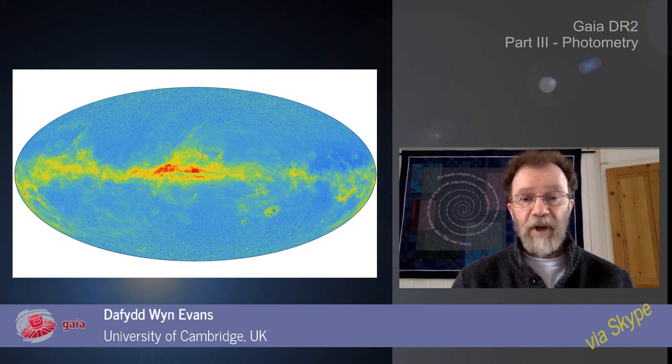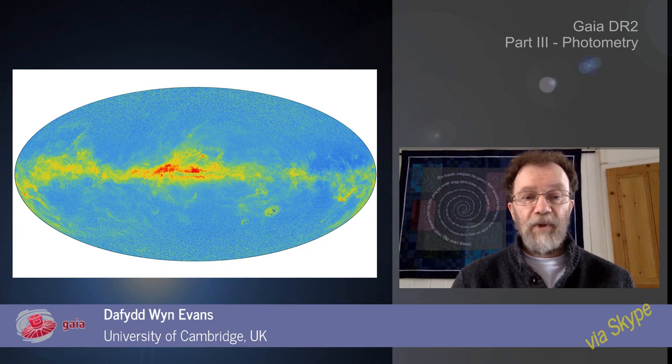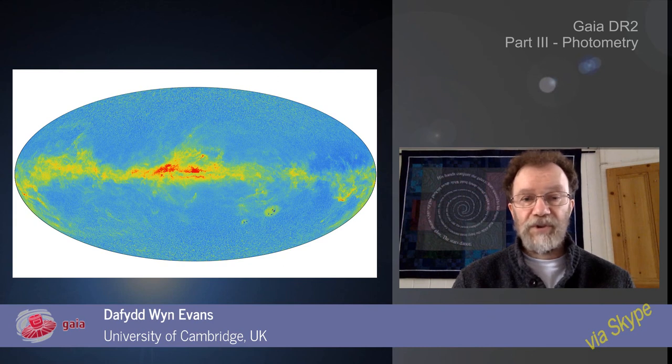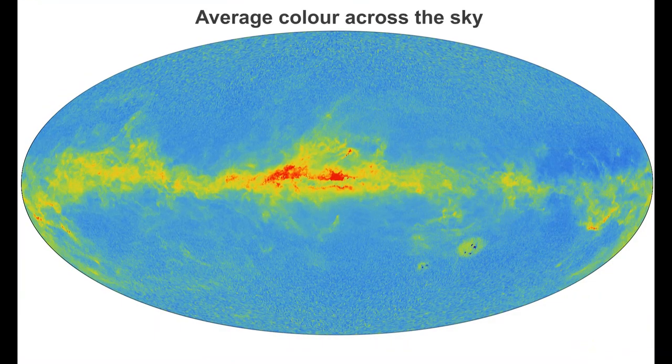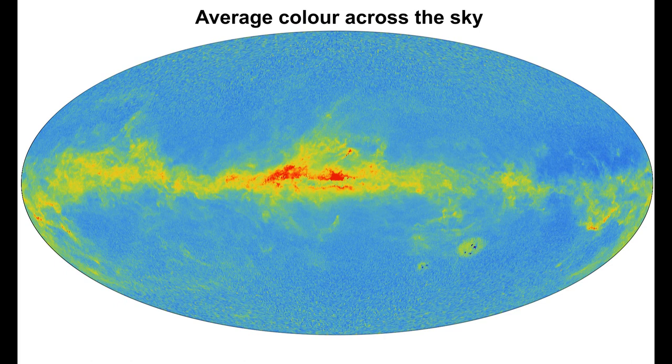I'd like to end this short presentation with the Gaia colour map showing the average colour of sources across the sky. This plot shows the quality of the Gaia photometry, which now includes colour information for over a billion sources. Alright, thank you so much. Thank you very much.